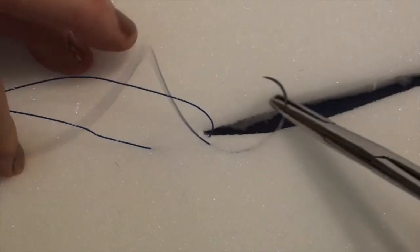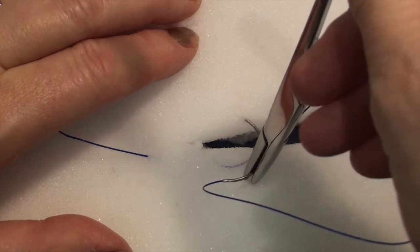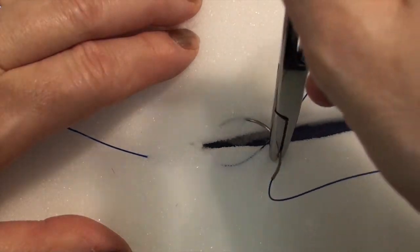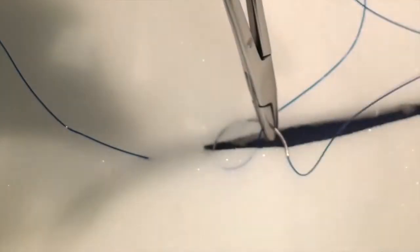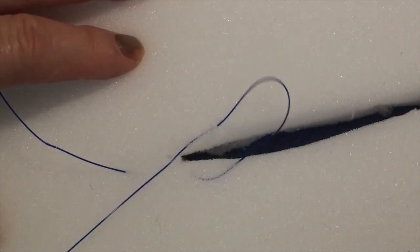Start by creating a small horizontal mattress stitch on one side of the incision and then again on the other side. The foam used as a teaching tool allows you to see what the pattern is going to look like.